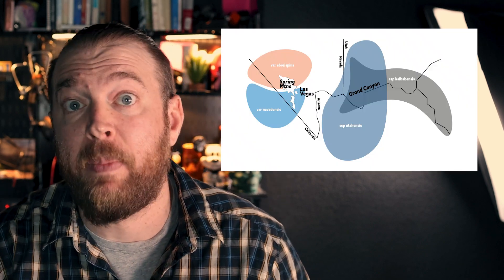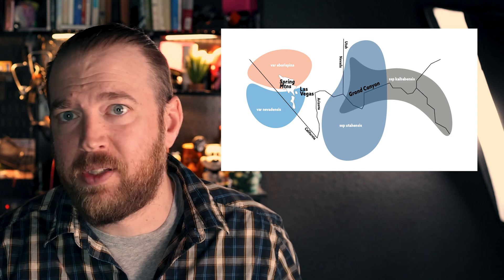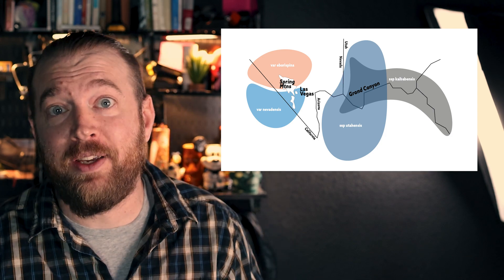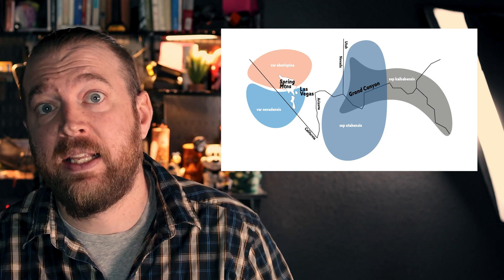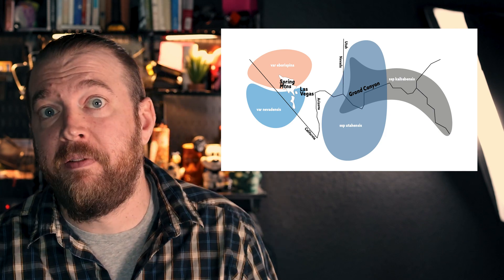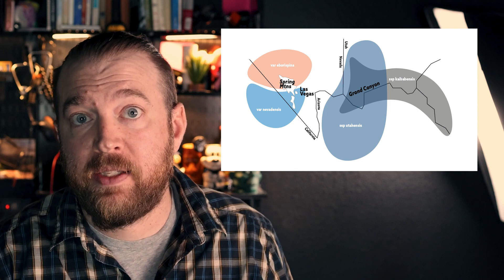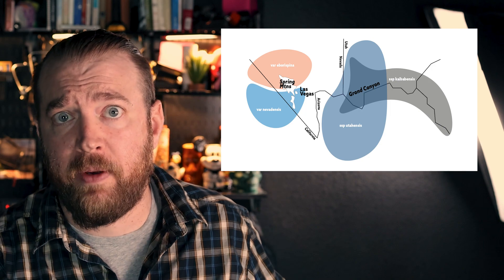There are four varieties of utaensis: cababensis, subspecies utaensis, eboraspina, and nevadaensis. Cababensis primarily grows in northern Arizona around the Grand Canyon, on the Kaibab Plateau, which is where it gets its name. Subspecies utaensis — which I sometimes call 'regular degular utaensis' on Instagram — grows in northern Arizona, southern Utah, southern Nevada, and southern California. Eboraspina and nevadaensis only grow in southern Nevada and southern California, particularly around the Spring Mountain Range.